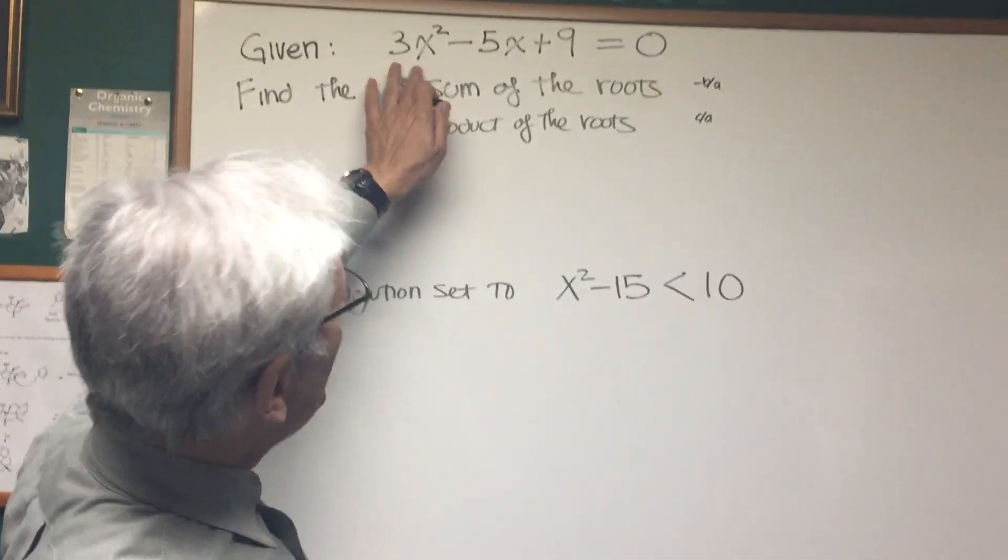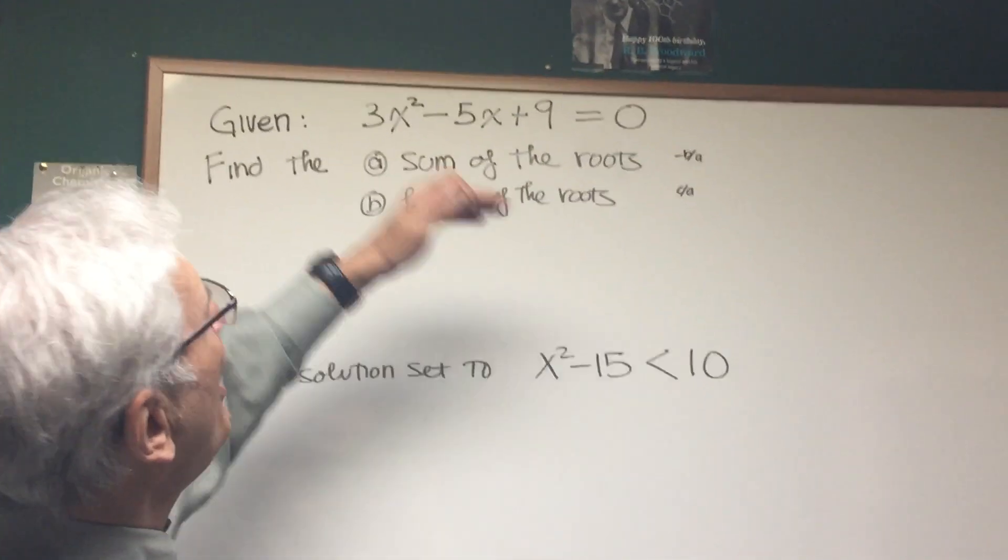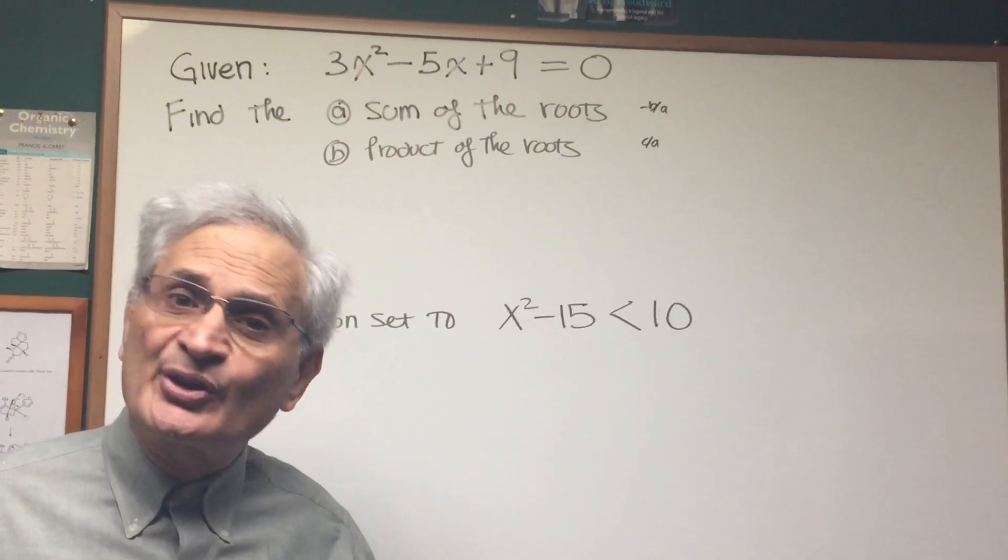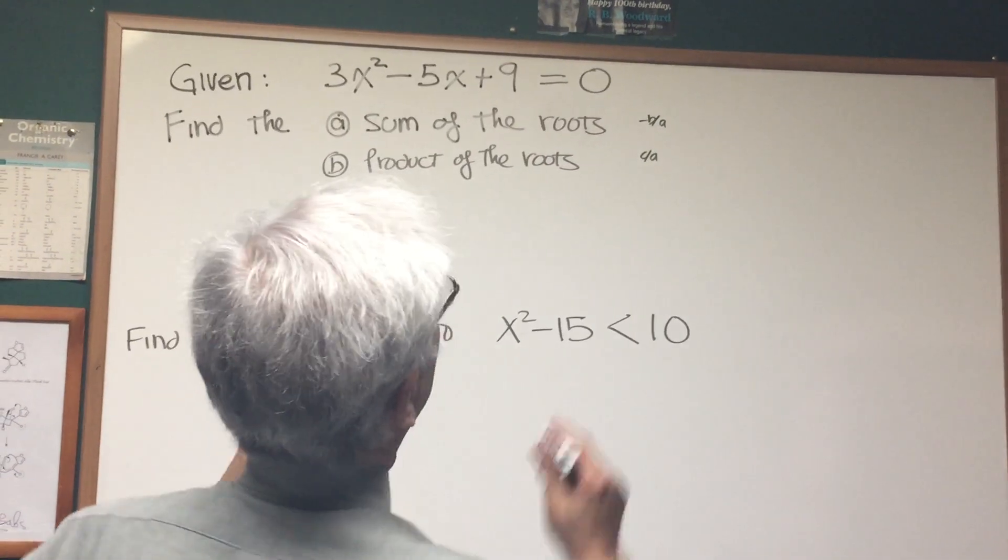Here is a quadratic equation, 3x² - 5x + 9. Find the sum of the roots, find the product of the roots. You know what? You don't even have to find the roots because there's a special formula.